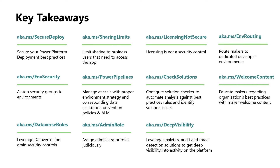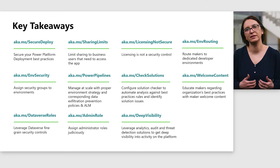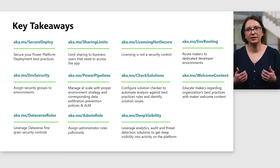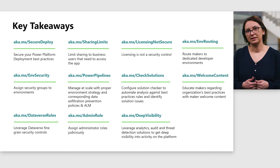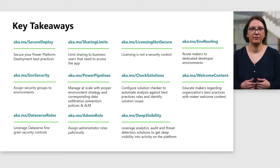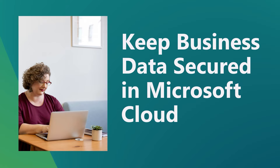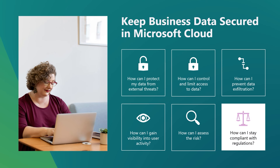Before we wrap up this chapter, let's recap some of the best practices we recommend when it comes to protecting sensitive business data from risks rooted within the organization's boundaries. Make sure access to resources is limited to only necessary business users by using the comprehensive set of roles and privileges in Dataverse, instilling sharing limits, assigning security groups to environments, and routing makers to dedicated developer environments. Educate your makers with welcome content. Manage at scale with proper environment strategy that includes connector management or data exfiltration prevention policies. For managed environments, configure a solution checker to automate analysis checking for best practices rules.